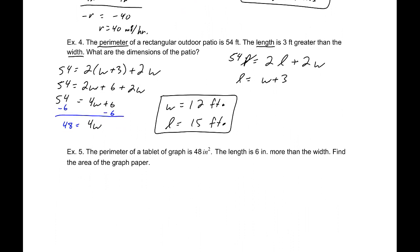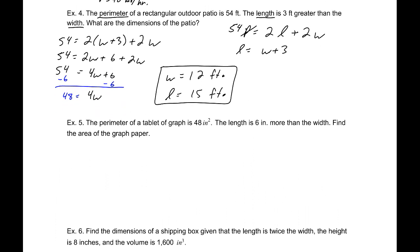Next, the perimeter of a tablet of graph paper is 48 inches. The length is 6 inches more than the width. Find the area of the graph paper. We need to do more than just find the length and the width, we need to find the area. Our perimeter formula is 2l plus 2w. The length is 6 inches more than the width. Our perimeter is 48.